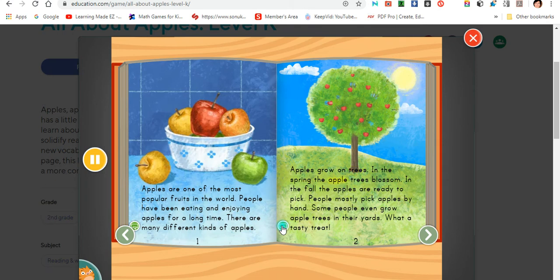Apples grow on trees. In the spring, the apple trees blossom. In the fall, the apples are ready to pick. People mostly pick apples by hand. Some people even grow apple trees in their yards. What a tasty treat!